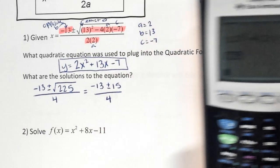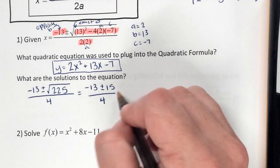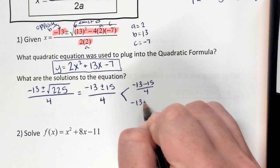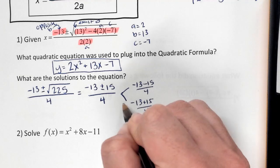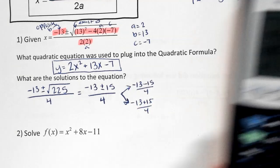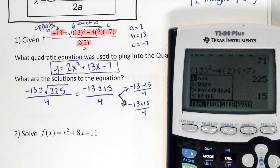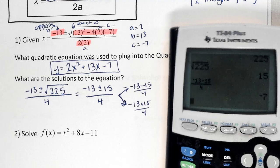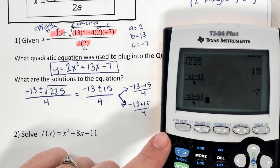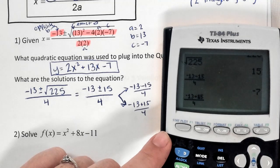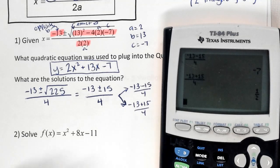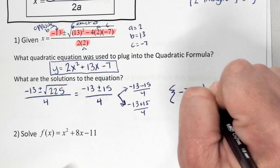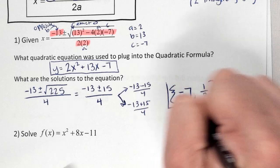This becomes negative 13 plus or minus 15 over 4. Neither term has a radical and neither is imaginary, so we can separate and simplify. We get negative 13 minus 15 over 4 and negative 13 plus 15 over 4. Computing those gives negative 7 and negative 7 and a half — those are your two solutions.